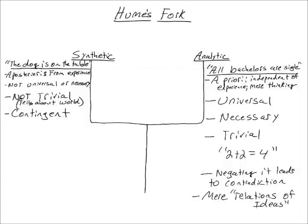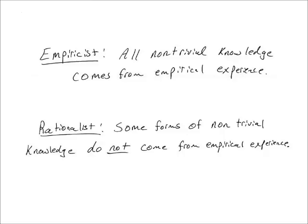Hume says analytic statements are merely relations of ideas because the predicate is contained in the subject. For example, 4 is contained in 2 and 2, and single is contained in the concept of bachelor. Hume believed all analytic ideas are trivial forms of knowledge because they don't tell us about the world. Synthetic knowledge, on the other hand, is not trivial — it actually tells us something about the world, like the dog is on the table, and it's based on our empirical sense impressions. So math and logic are analytic: they're trivially true, they're tautological.